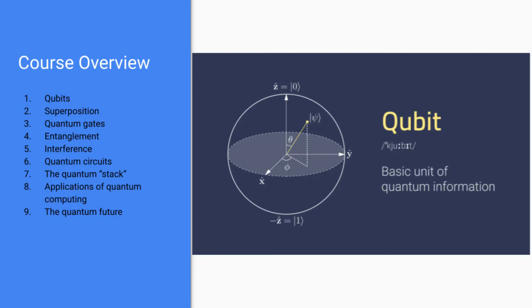Then we'll be covering quantum circuits, which create the algorithms that quantum computers can run, which give us an advantage over classical computers. Then we'll be looking at the quantum stack, which is the layers of hardware in quantum computing that allow quantum computers to operate.